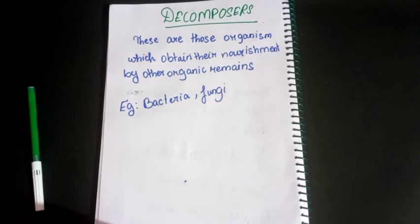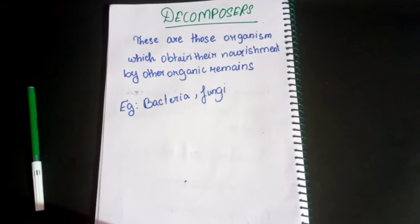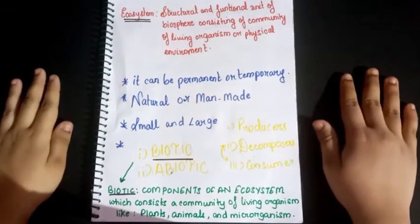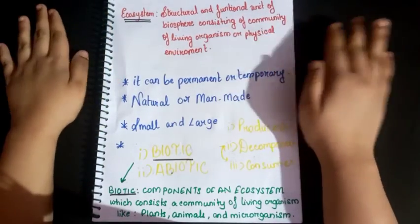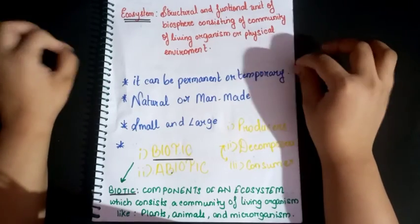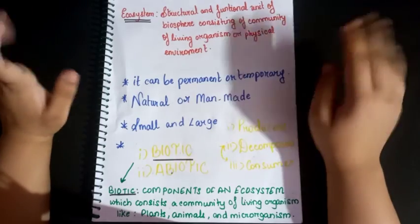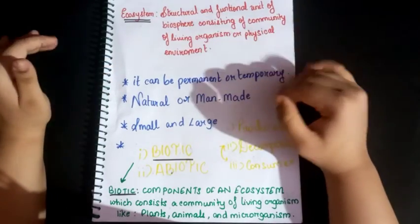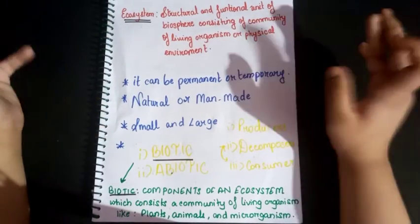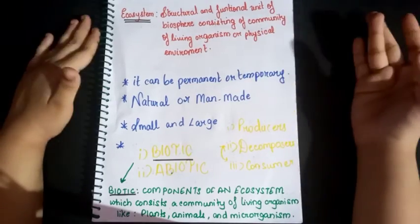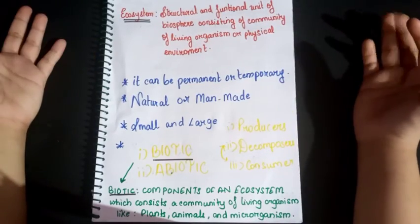Let's just go through all the definitions we learned. Here are the notes of the ecosystem. The definition of ecosystem is: a structural and functional unit of biosphere consisting of a community of living organisms and physical environment. There are some variations — it can be permanent or temporary, it can be natural or man-made (man-made means aquariums), and it can be small or large (small means a small aquarium, large means an ocean).